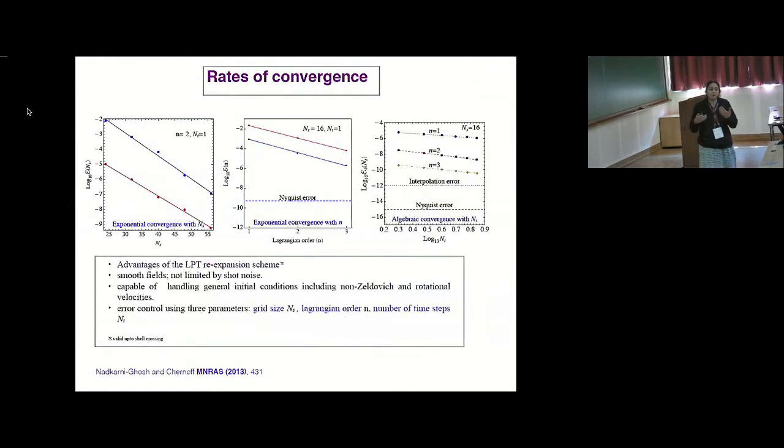So to conclude, this LPT re-expansion scheme is a scheme that deals with smooth fields not limited by shot noise. It is capable of handling generic initial conditions. So the scheme we had, we allowed for velocities that were not Zeldovich as well as transverse components of the velocity field were allowed. And you have error control with three parameters. One is the grid size NS, the second is the Lagrangian order N, and the number of times NT. And the error is exponential with NS, exponential with Lagrangian order, and algebraic convergence in NT. And the fine print here, all of this is valid up to shell crossing.